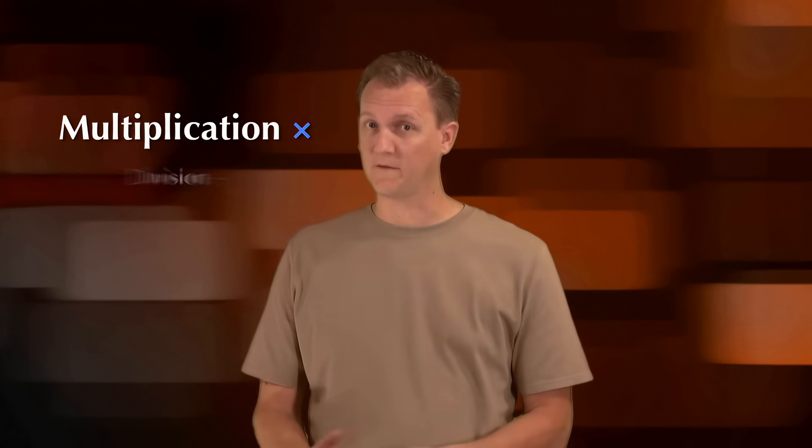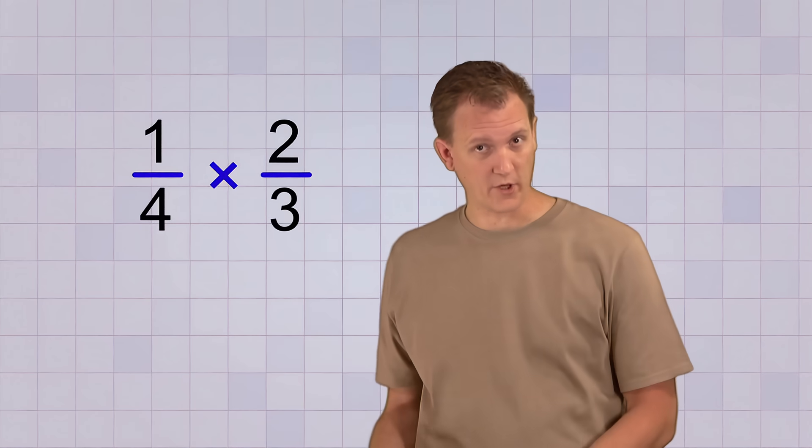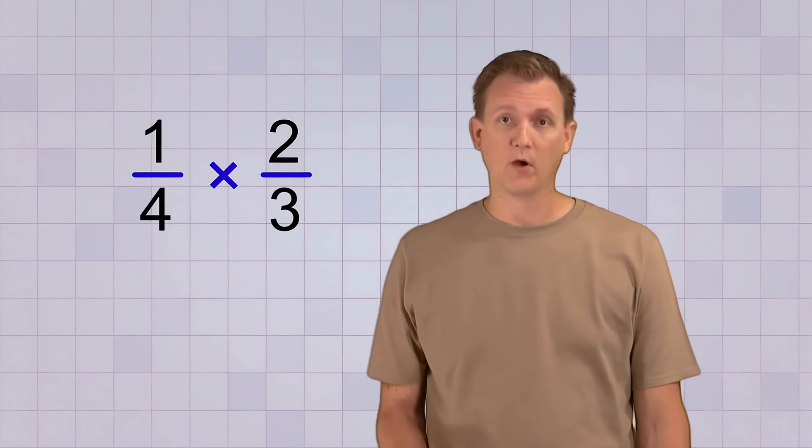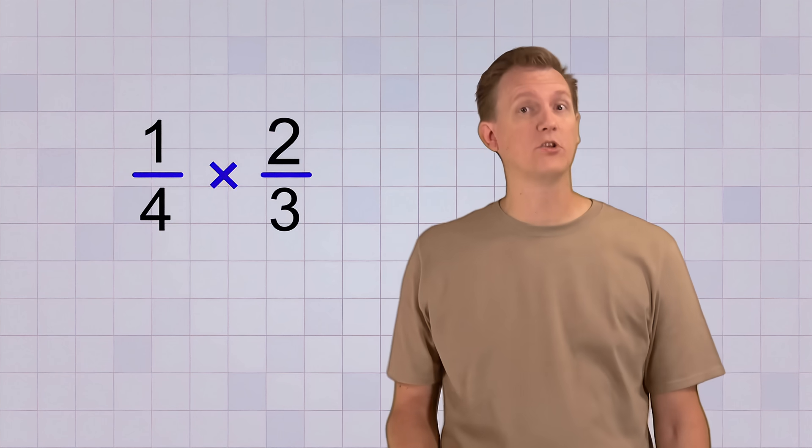The reason it's easier is because fractions are really just division problems, and multiplication and division get along much better than addition and division. Now since fractions are division, that means if I have the problem 1 fourth times 2 thirds, it's the same as the problem 1 divided by 4 times 2 divided by 3.